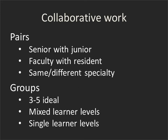How you pair learners depends on what you're asking and what your learner group is. You can pair seniors with juniors very effectively, or a faculty with a resident — in the same specialty or across sub-specialties. In groups, no more than five; you need at least three or it's a pair. You can think about mixed learner levels or single learner levels. If doing single learner levels, you're probably going to want to have stage-level tasks — a more advanced task for the senior group and a more basic task for the junior group.